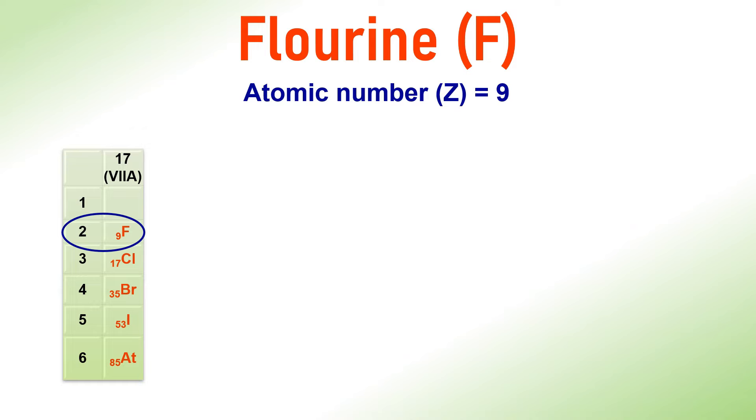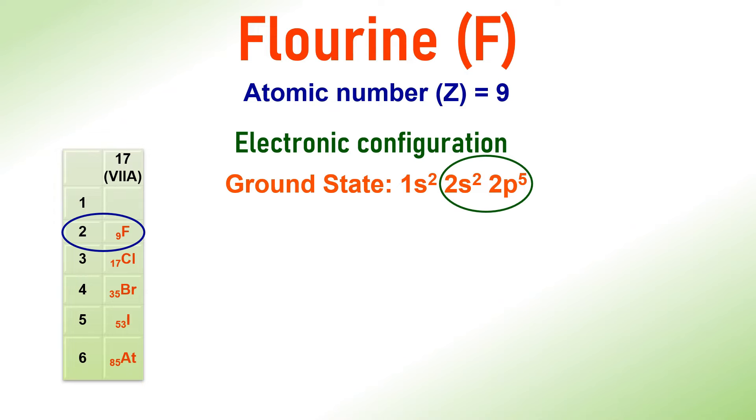The electronic configuration of Fluorine is 1s2, 2s2, 2p5. There are seven electrons in the outer shell with one unpaired electron. Fluorine contributes this unpaired electron for covalent bond formation. Thus, Fluorine can form one covalent bond and its valency is 1.